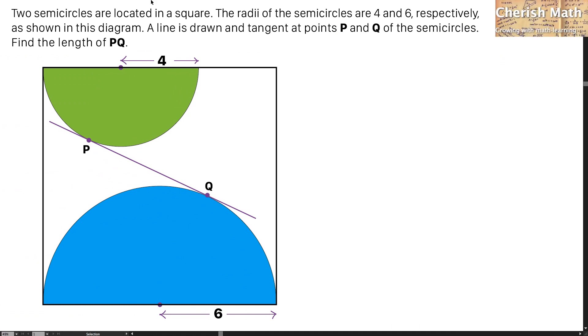Say hi from Cherish Math, this is the question. Two semicircles are located in a square. The radii of the semicircles are 4 and 6, respectively.